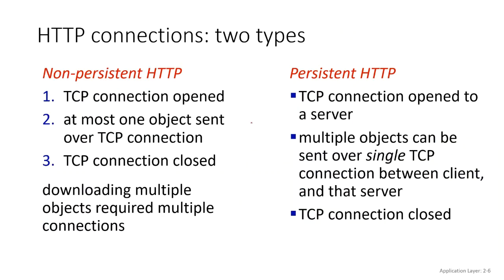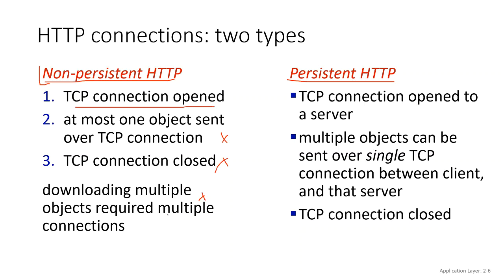In HTTP connections we have two types: non-persistent and persistent. In a non-persistent connection, a TCP connection opens, sends one object, and then closes. That can be fine if you have one or two objects to pull over, but it's not very efficient if you have multiple objects, since you'd need to open multiple connections.